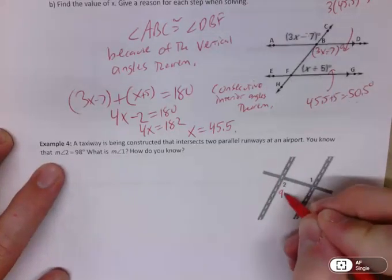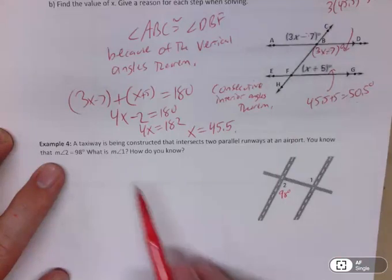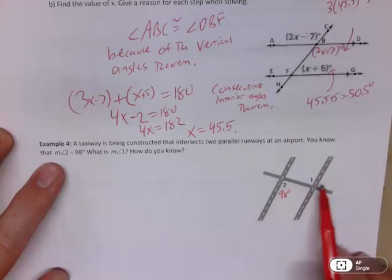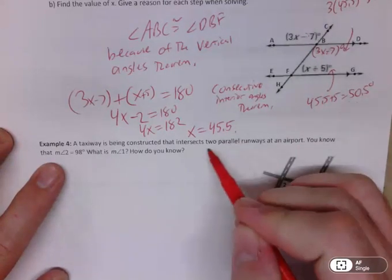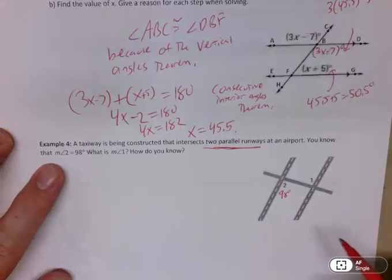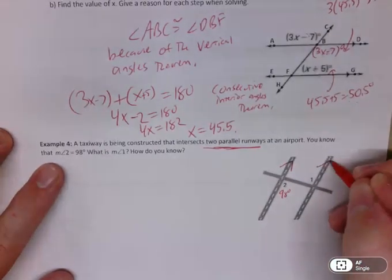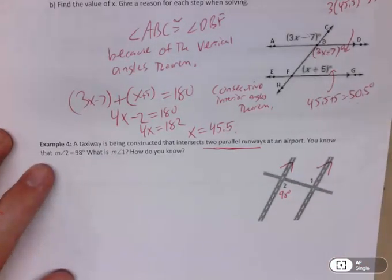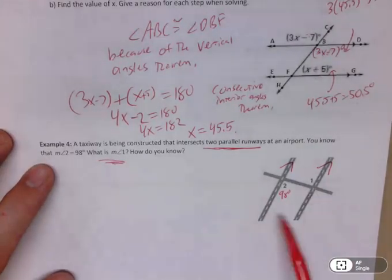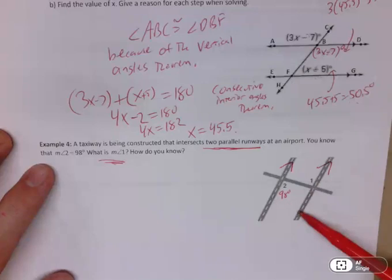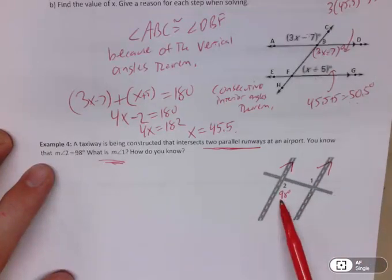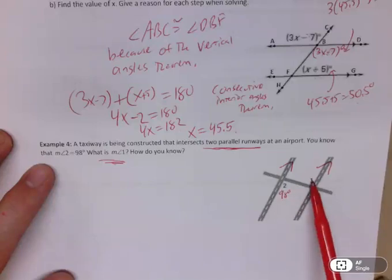You know that the measure of angle 2 is 98 degrees. So as soon as I hear that, I'm putting in 98 degrees. And they want me to figure out the measure of angle 1, which is this one here. So I know that these two runways are parallel. So I'm going to mark that in my picture so I remember that those are parallel. And as soon as you do that, I'm sure pretty much all of you watching right now are like, wait, I know what angle 1 is. But you have to make sure you know what you got. You got your parallel lines, you got your transversal, they gave me one of the angles. And now I just need to figure out what's the relationship between those two.